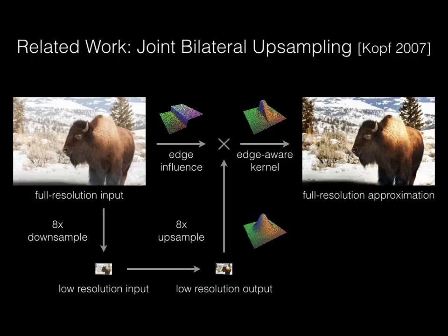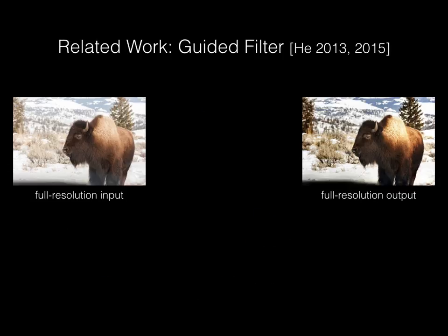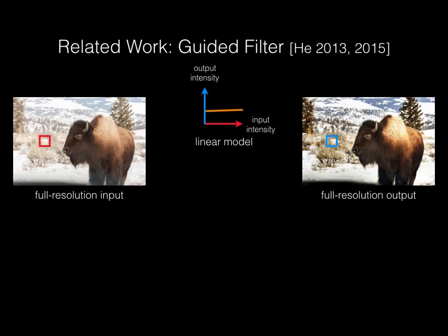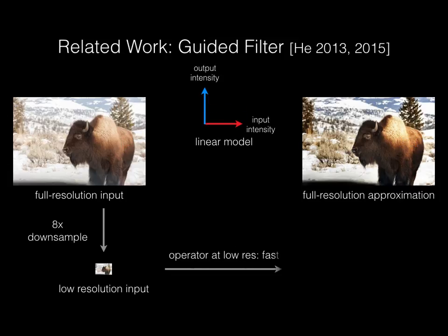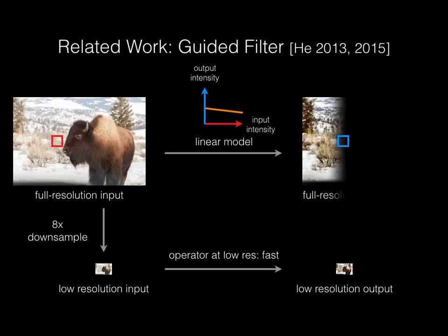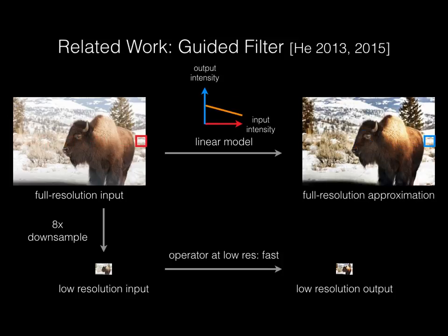Thus, the result is a piecewise constant upsampling of the low-resolution output, snapping to the edges of the full-resolution input. Another popular approach is the guided filter by He and colleagues. They propose that each full-resolution output pixel is a linear function of the input pixel, where the slope and offset of the line are computed over patches and therefore vary smoothly across the image.